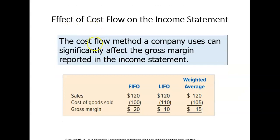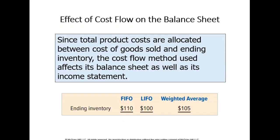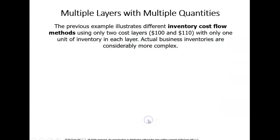Notice that your sales price doesn't change depending on which method you choose. Your cost of goods sold will be different, which gives a different gross margin. Same company, same transactions — just different ways to compute cost of goods sold. Depending on which method is used, it gives a different cost of goods sold, which in turn gives a different gross margin. It also impacts ending inventory, showing different balances under FIFO, LIFO, or the weighted average approach.